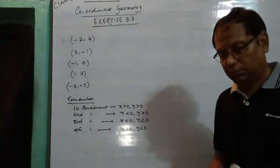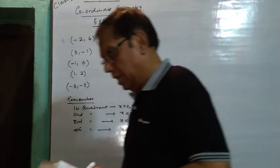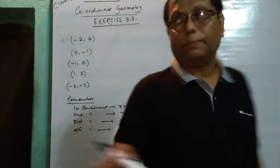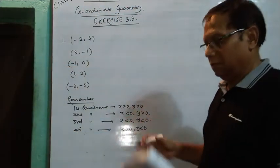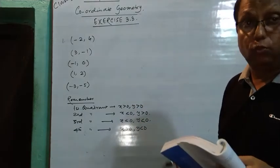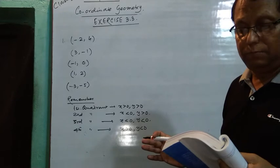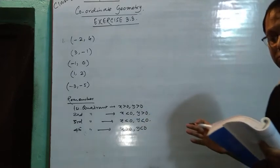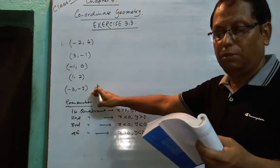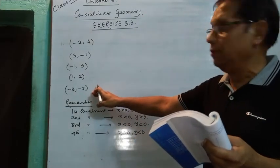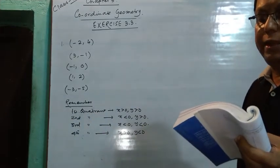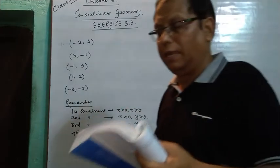Hello students, today we are on the last exercise, 3.3, of coordinate geometry. There are only two questions. The first question says: in which quadrant or on which axis do each of these points lie? Verify your answer by locating them on the Cartesian plane.